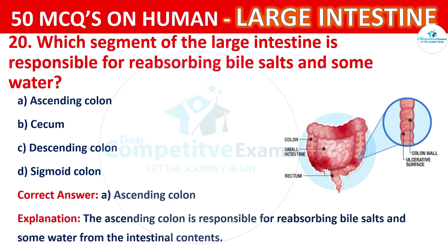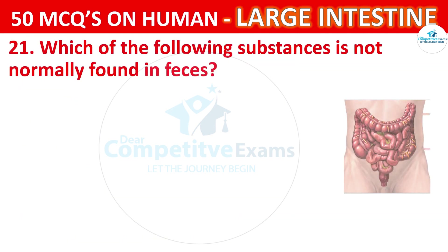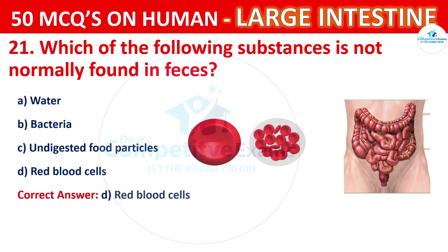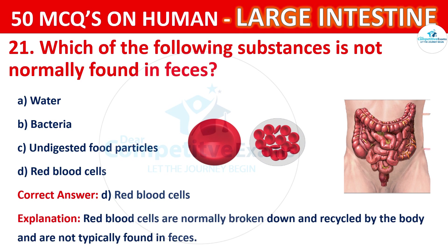Question number 21. Which of the following substances is not normally found in feces? Your options are: Water, Bacteria, Undigested food particles, or Red blood cells. The correct answer is D, i.e. Red blood cells. Red blood cells are normally broken down and recycled by the body and are not typically found in feces.